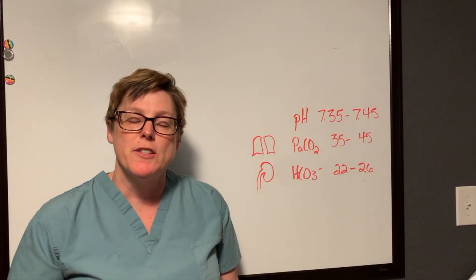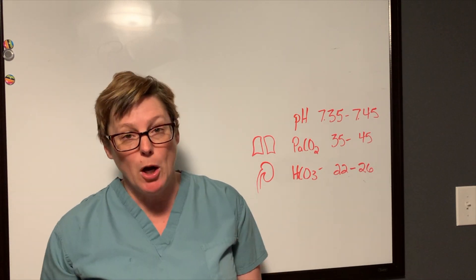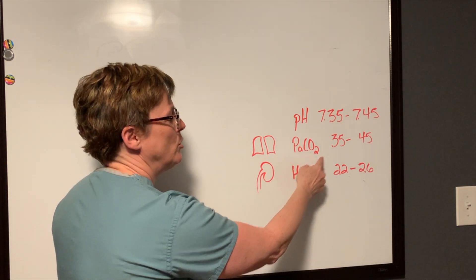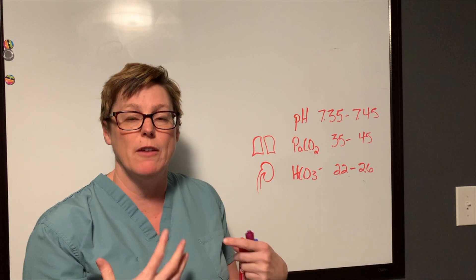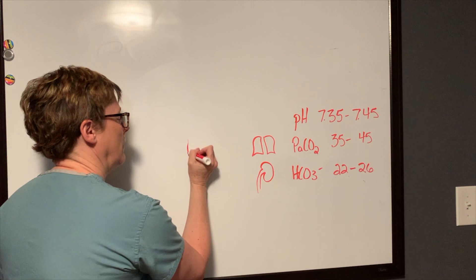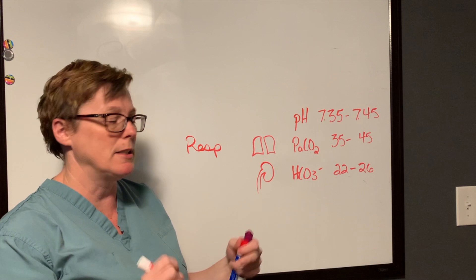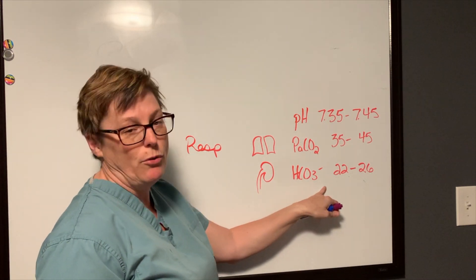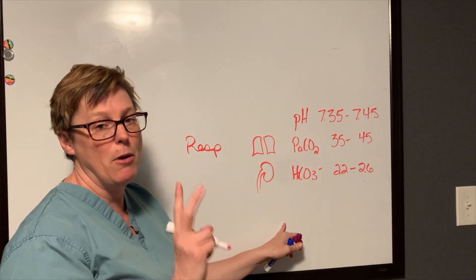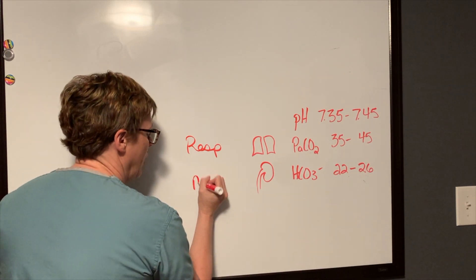We're identifying if your acid-base imbalance is respiratory or metabolic, and I'd like to offer you this diagram. The PaCO2 — CO2 is a reflection of how well our lungs are working, so that would be respiratory. It's a reflection of the respiratory system. HCO3 is a reflection of the kidneys and how well they are able to maintain that positive-negative ion retention or excretion, and so this becomes metabolic.